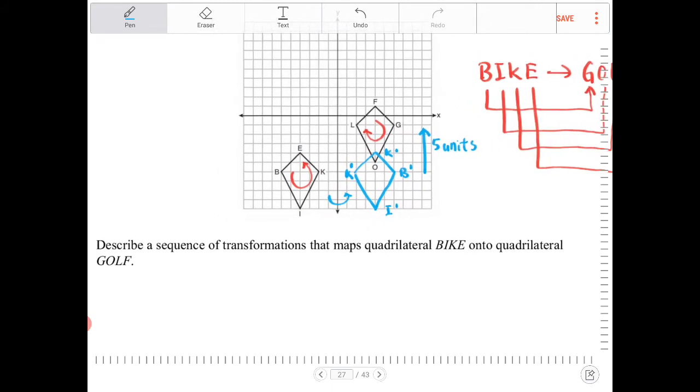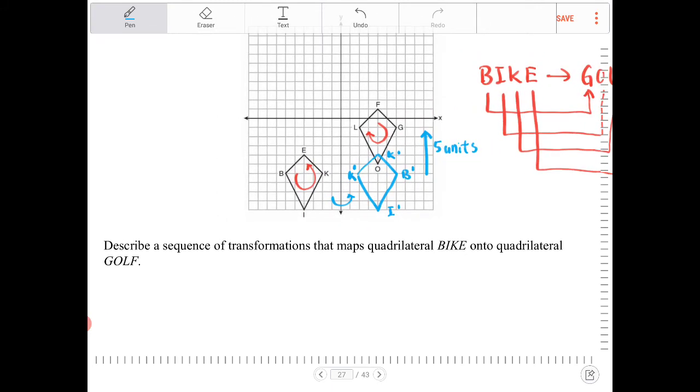So to satisfy this question, it says to describe a sequence of transformations that maps quadrilateral B-I-K-E onto quadrilateral G-O-L-F. I'm going to perform a reflection over the Y-axis, followed by a translation of 5 units up, and I'm going to be doing this for quadrilateral B-I-K-E.